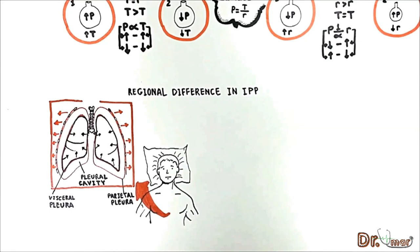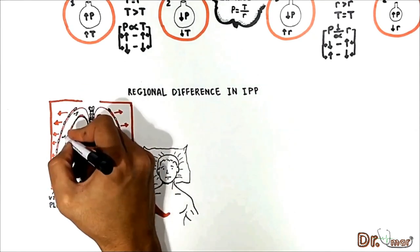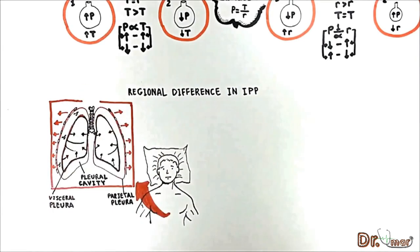In a man who is lying down, the negative 5 intrapleural pressure is uniform in all pleural regions — the base of the lung, middle, and apex.